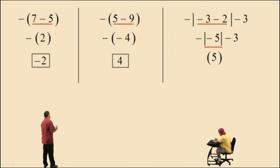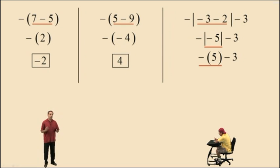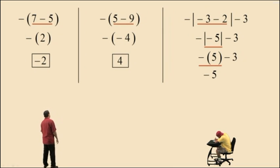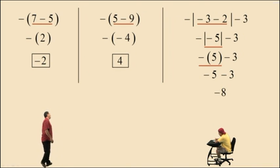Now we bring down our work: we have an opposite in front and subtract 3. We evaluate the opposite of 5 because opposites can be treated as multiplying by negative 1, and you have to do multiplication before subtraction. So negative 1 times 5 is negative 5. Then negative 5 subtract 3 is negative 8.